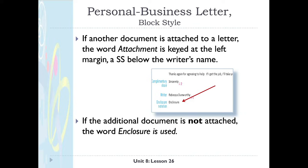If another document is attached to a letter, the word 'Attachment' is keyed at the left margin a single space below the writer's name. In this case, Rebecca has enclosed something — perhaps a map of the school — along with her letter. If it's not stapled, it's an 'Enclosure'; if it is stapled to the letter, it says 'Attachment.' So if the document is not attached, use 'Enclosure'; if it is attached, use 'Attachment.'